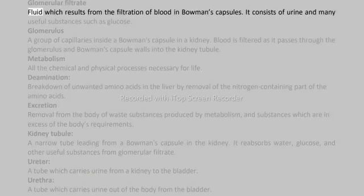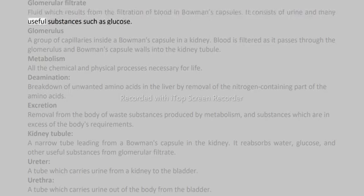Glomerular filtrate: fluid which results from the filtration of blood in Bowman's capsules. It consists of urine and many useful substances such as glucose.